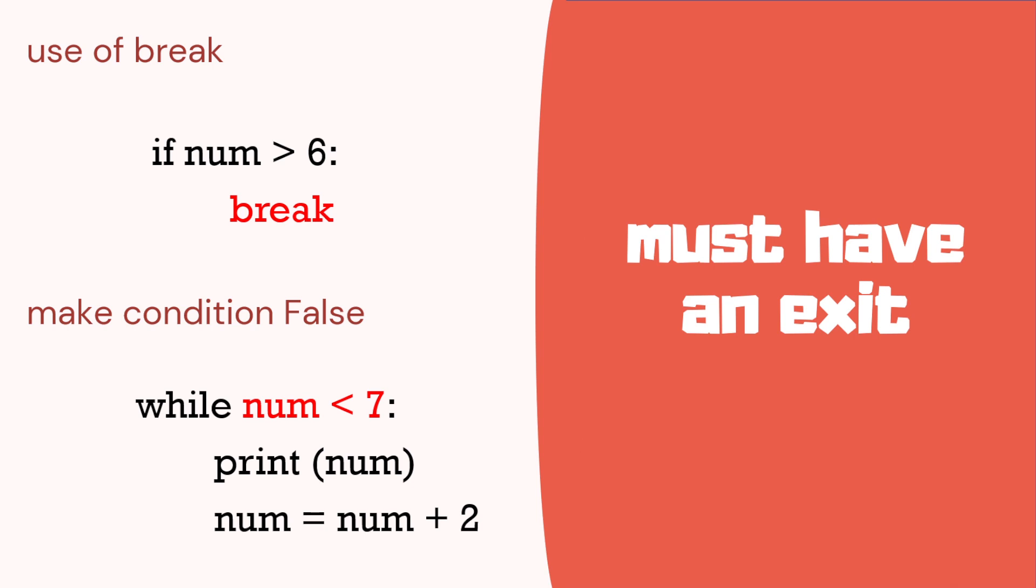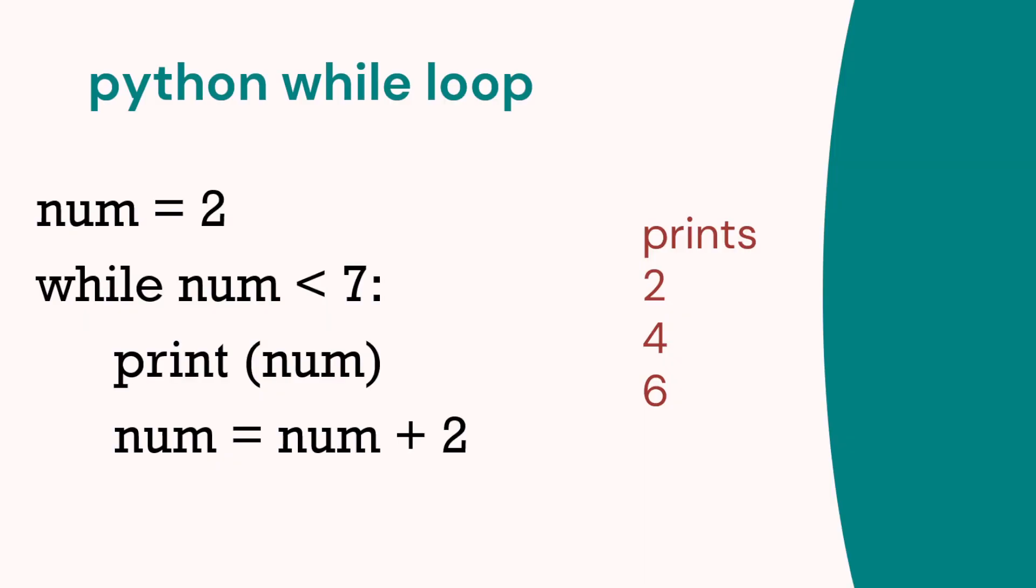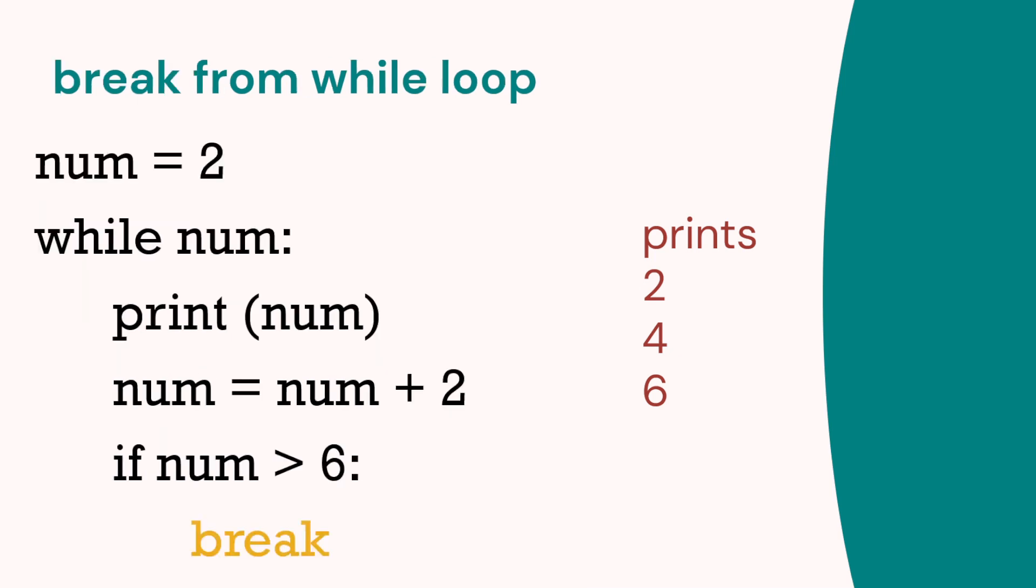So remember, you must have a way of exiting. We can either use the break we saw before, the break keyword, or we can make the condition false. So for example, when a number equals or is greater than 7. So here when a number reaches 8, it comes out of the loop. So this prints 2, 4, and 6. Number 2 plus 2 plus 2 and then out of the loop. Using break, we've got 2 plus 2 plus 2, and then if number is greater than 6 it breaks. So these are two methods of coming out of the while loop.